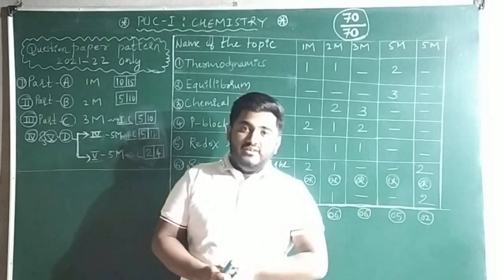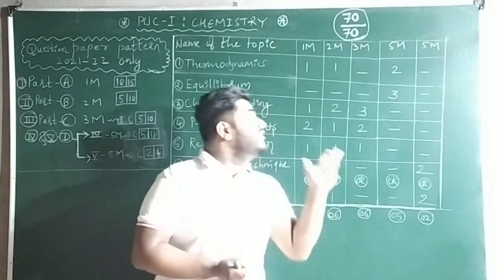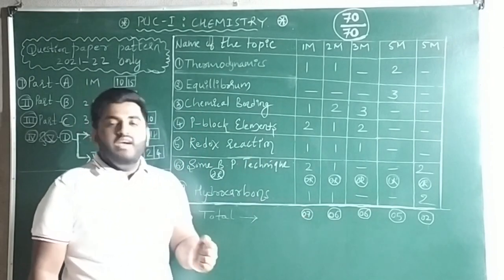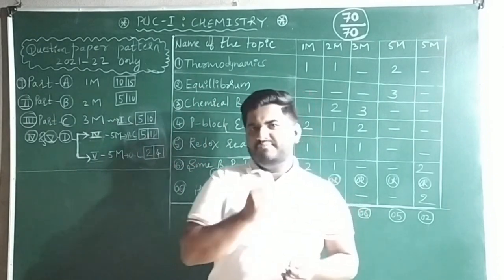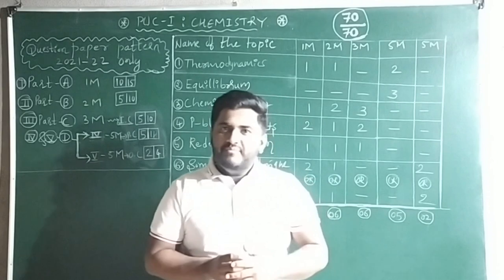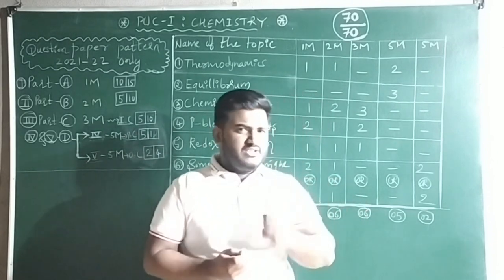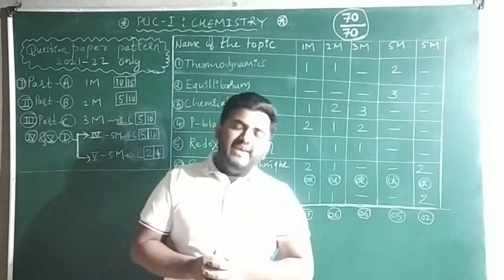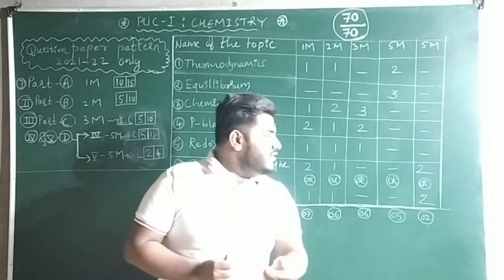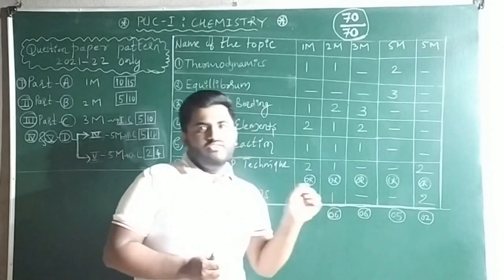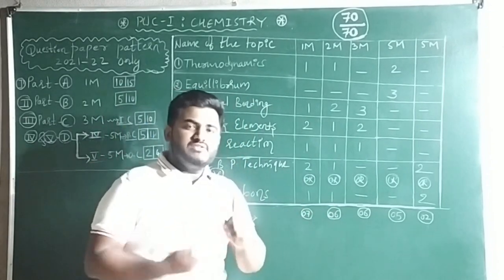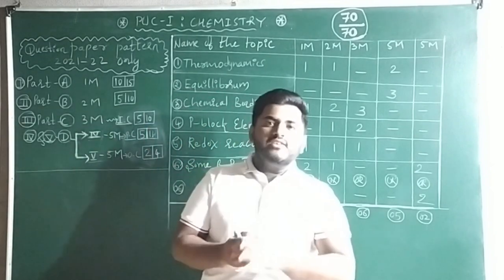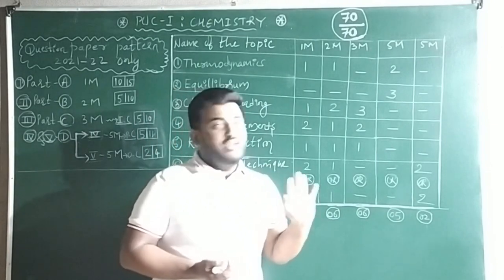Even though you're only studying 6 chapters instead of 14, you can cover the entire paper. For the one-mark Part A, you're getting only 7 questions, so you need a few extra. Study simple one-mark questions like definitions of molarity, normality, and the value of one AMU from Some Basic Concepts of Chemistry, and also one-mark questions from Chemistry in Everyday Life — for example, what is acid rain.